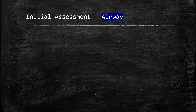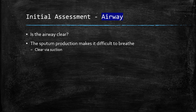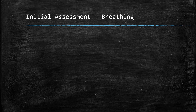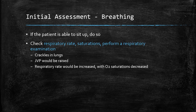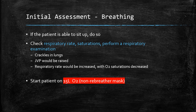We go through the standard ABCDE of initial assessment. Beginning with the airway — most important, is it clear? Sputum production in a left ventricular failure patient may make it difficult for them to breathe, so you can use suction if warranted. B is for breathing: sit the patient up, check the respiratory rate, saturations, performing a full cardiorespiratory examination. Findings would include coarse crackles due to fluid accumulation, raised JVP due to pulmonary congestion, increased respiratory rate, and decreased O2 saturations.